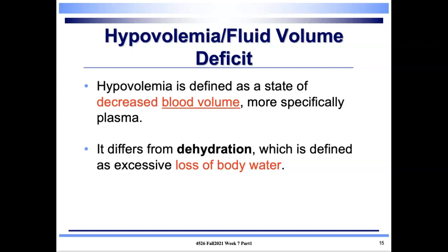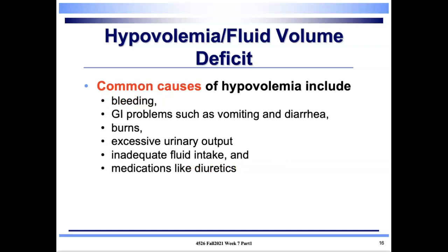The common causes of hypovolemia include GI bleeding, GI problems such as vomiting and diarrhea, burns, excessive urinary output, inadequate fluid intake, and medications like diuretics. Here we're looking at hypovolemia and dehydration combined and the causes common to both.